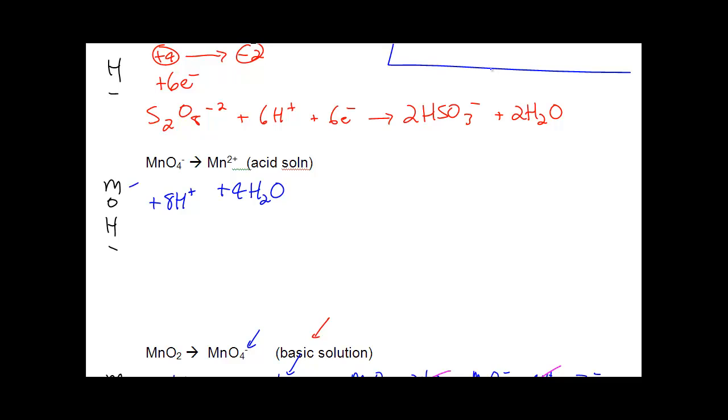Now, I've got to balance my charge. Well, my total charge on this side are eight pluses and one minus for a total charge of plus seven. And on this side, since water is neutral, I've got two pluses. My total charge is plus two. I've got to bring the seven down to the two by adding five electrons.